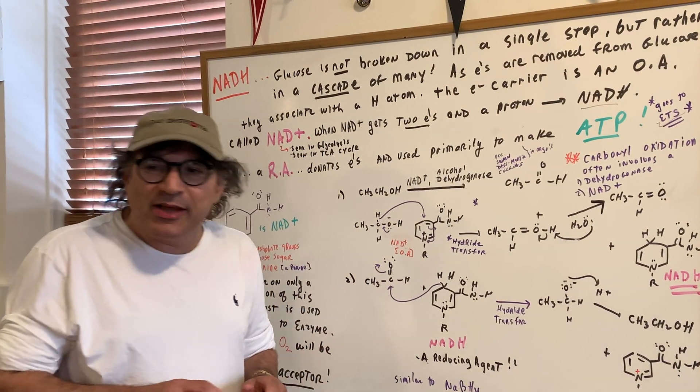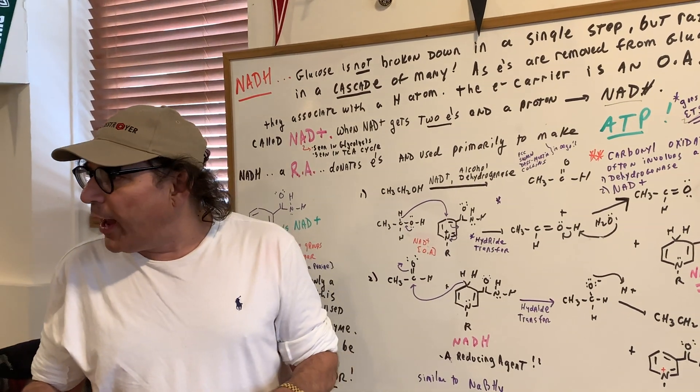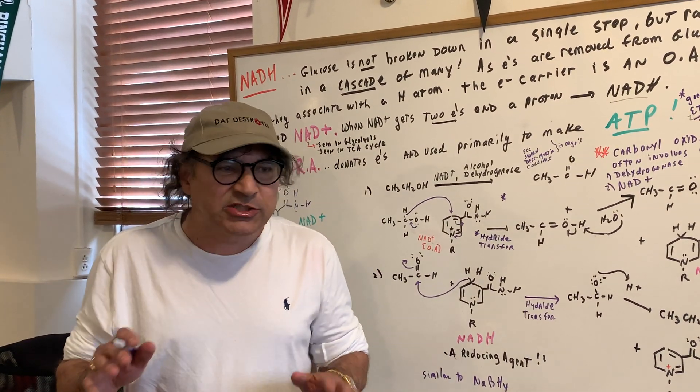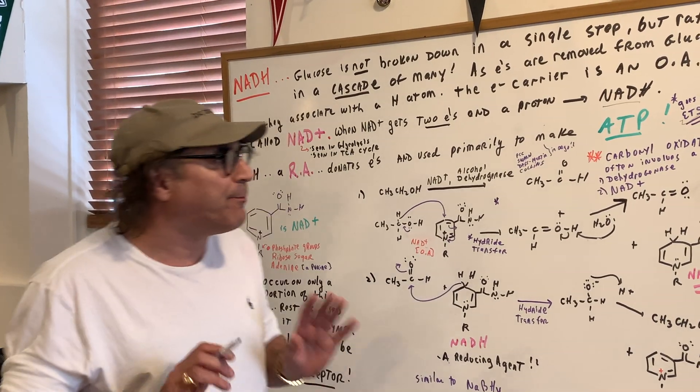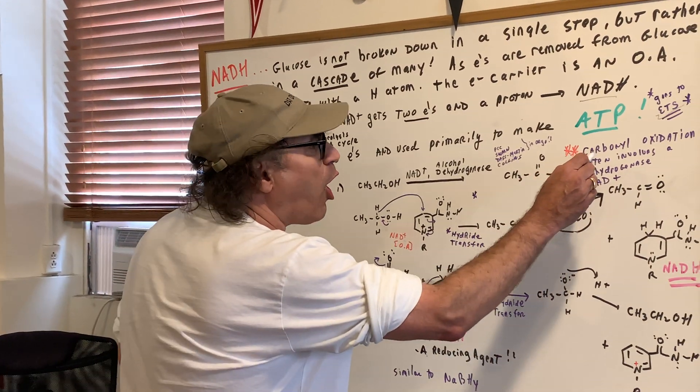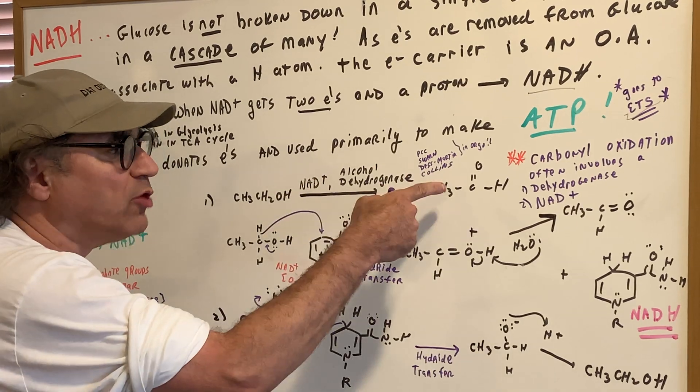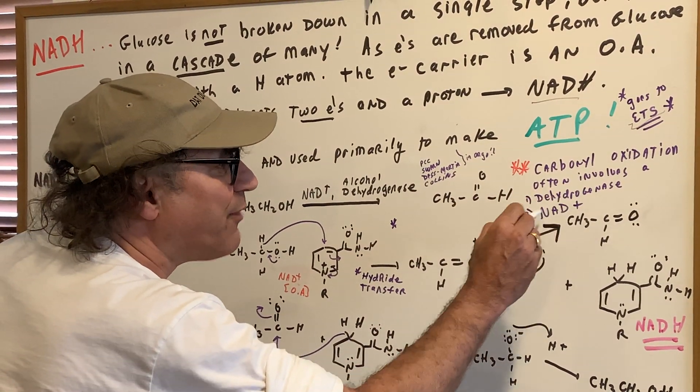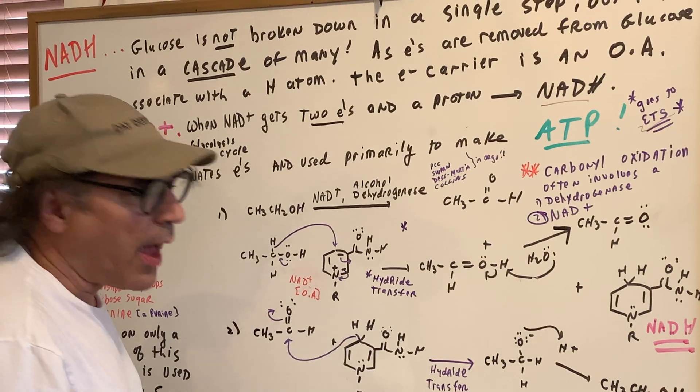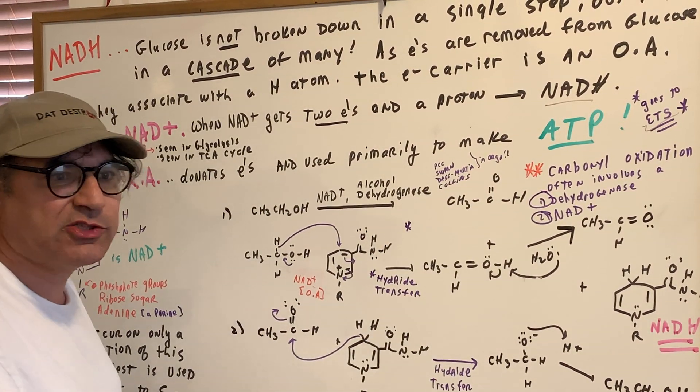Now, as a good general rule, if you remember there's another agent and that was called FAD. We're going to stick to NAD tonight, but as a good rule of thumb, carbonyl oxidation, meaning you're going from, say, an alcohol to an aldehyde, often involves NAD+ as well as a dehydrogenase enzyme.